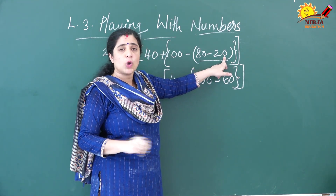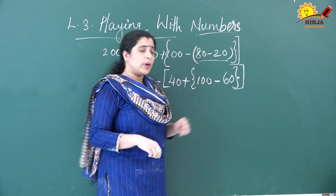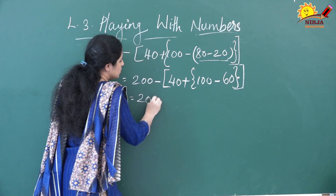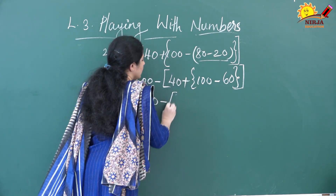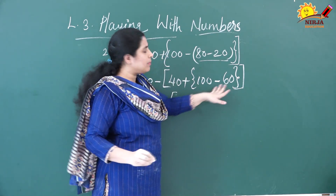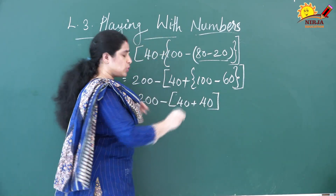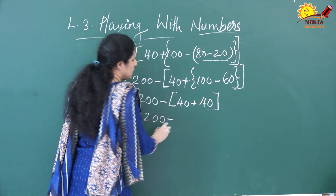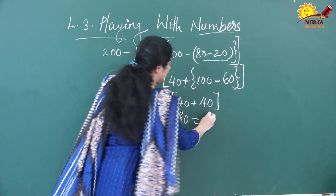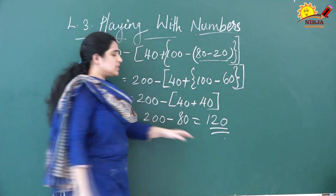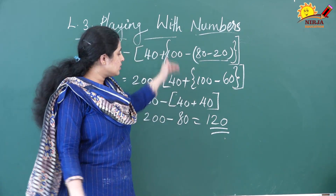Now the round bracket is gone. We are left with the curly bracket and the square bracket. We solve the curly bracket next: 40 plus 100 minus 60 gives 40. Now we have only the square bracket: 200 minus 40 plus 40, which gives 80 inside the bracket. So 200 minus 80 equals 120. That is the final answer. This is how you solve problems where brackets are present.